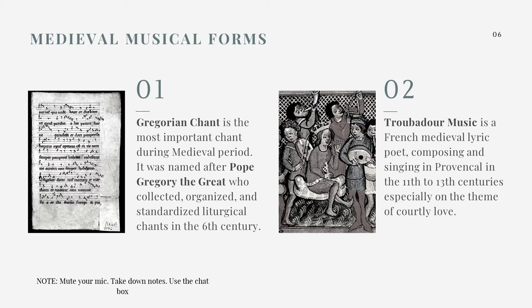Troubadour music is a secular type of music. When we talk about secular music, it pertains to music that is not religious. Usually the theme of secular music is about love, friendship, or nature — anything not related to religious belief. Troubadour music is one of those. Now let's listen to an example of a troubadour music.